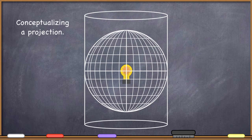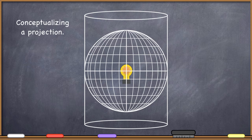Now, how am I going to get the data — whatever data happens to be on my reference globe — to the developable surface? We conceptualize that by thinking of it as actually projecting with a light. So if you think of the reference globe being completely clear, but with black lines drawn on it — in this case, the latitude and longitude — you can put whatever information you're trying to map on your reference globe. Then you put a developable surface, in this case a cylinder, around the globe, and turn on a light bulb right in the middle of the reference globe. You would see shadows cast from all of those black lines projecting out onto the developable surface.